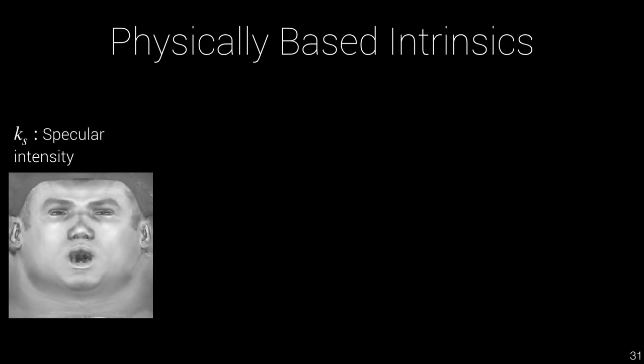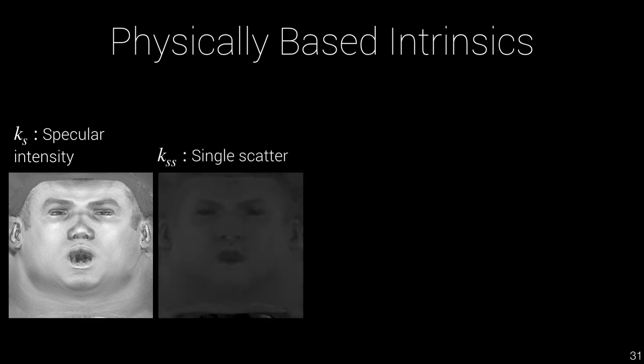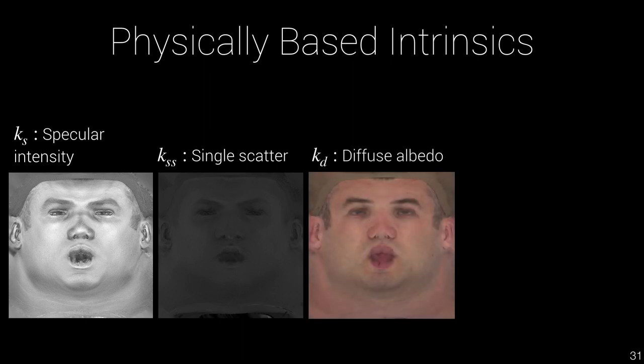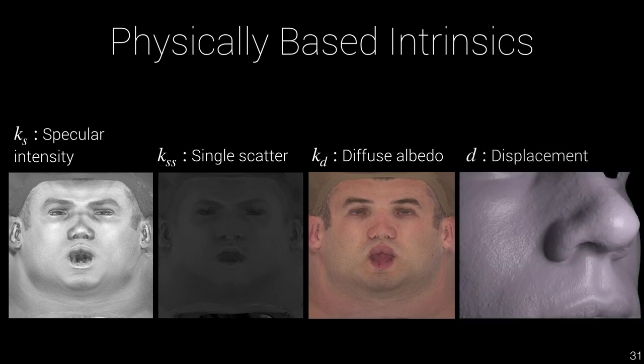The final result is a set of 2D mappings of physically-based intrinsics. Ks stands for specular intensity — the fraction of radiosity that keeps polarization after a single reflection. Kss, or single scatter, is the fraction of radiosity that keeps polarization after a single diffuse scattering. Kd, or diffuse albedo, is a wavelength-dependent fraction of diffusely reflected radiosity that does not get absorbed. D corresponds to the displacement from the low-resolution base mesh along the normal to the face surface, which is converted to a normal map for real-time rendering.